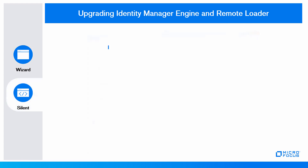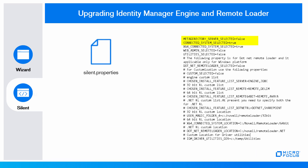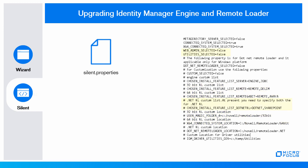In silent mode, find the silent properties file at the specified location. Specify these values for 32-bit remote loader, 64-bit remote loader, and .NET Remote Loader. Note that .NET Remote Loader is only for Windows machines. Specify whether you want to install the Identity Manager server and drivers, the 32-bit remote loader service and drivers — you can install both 32-bit and 64-bit versions on the same server — and the utilities and system components for the remote loader.